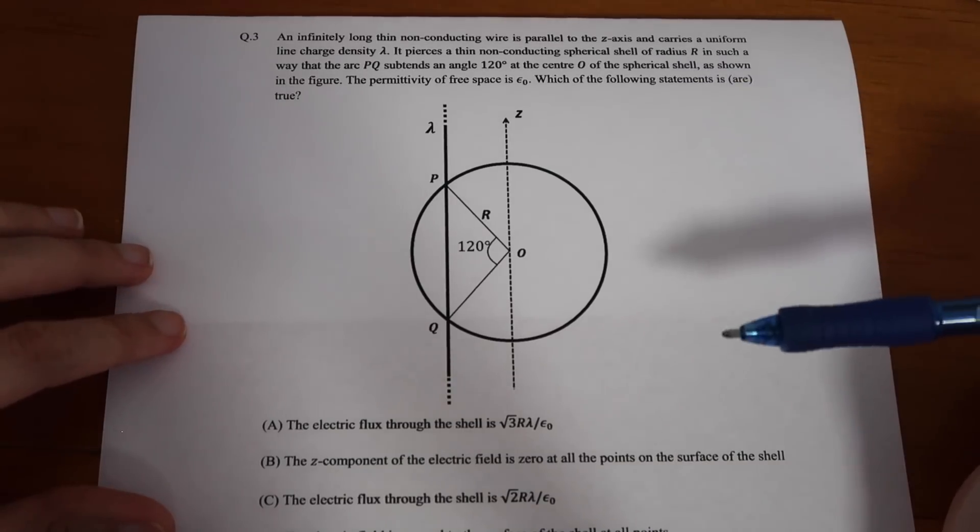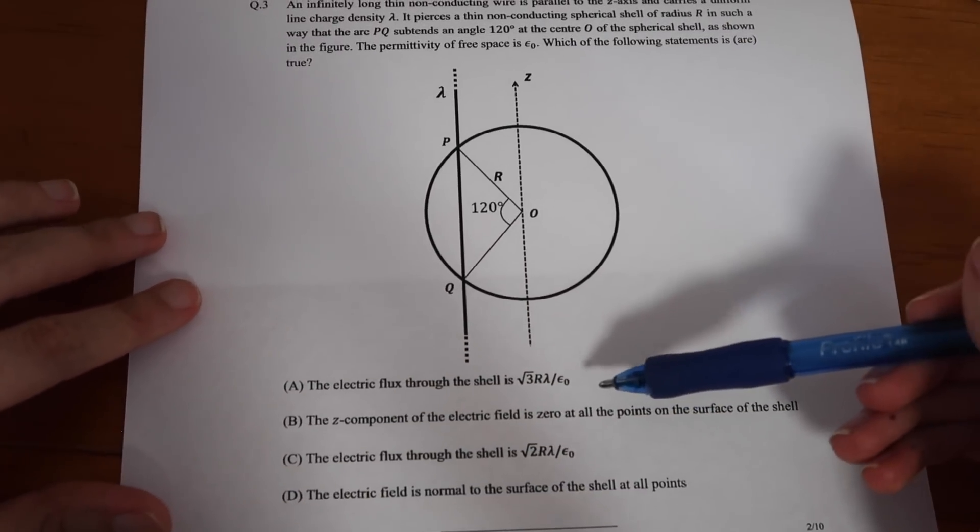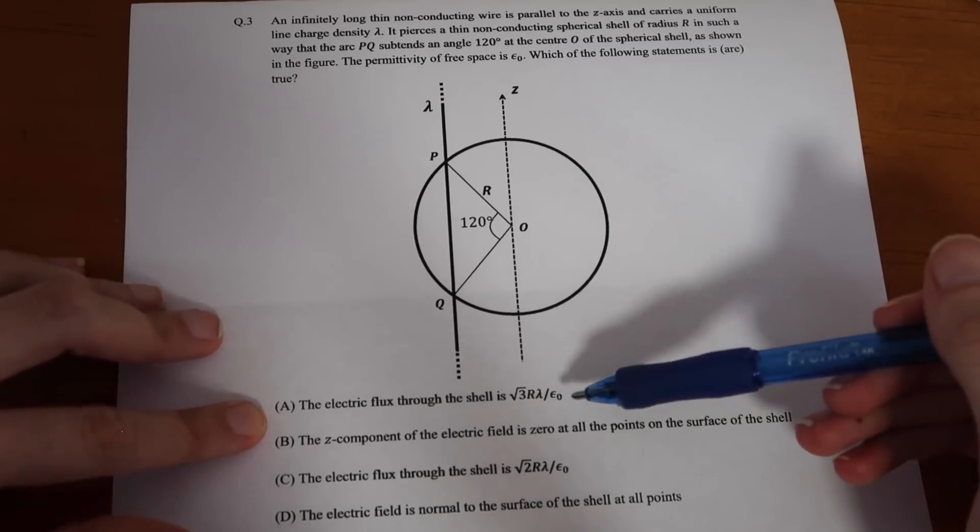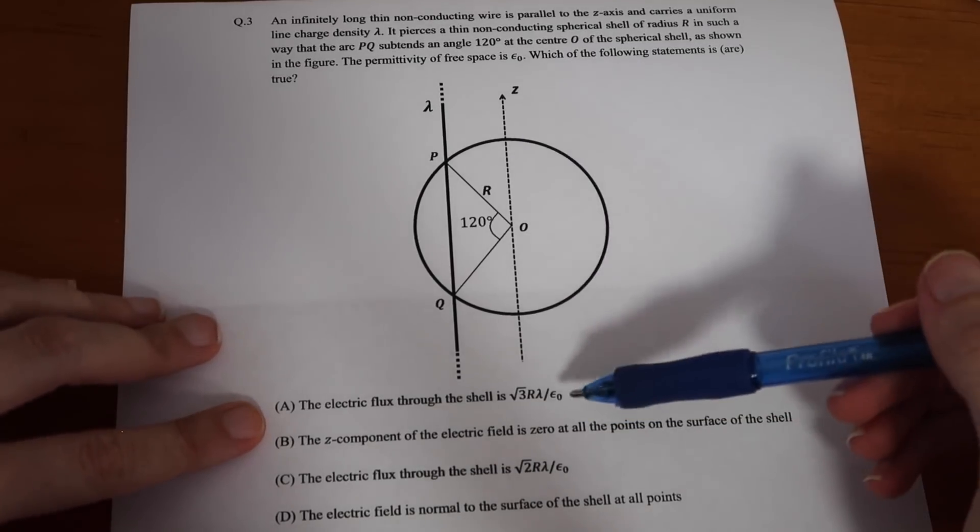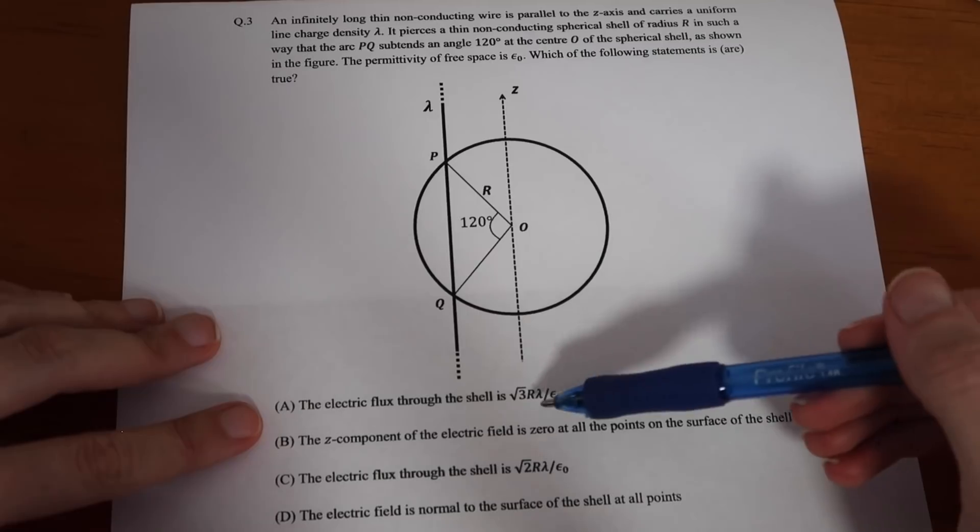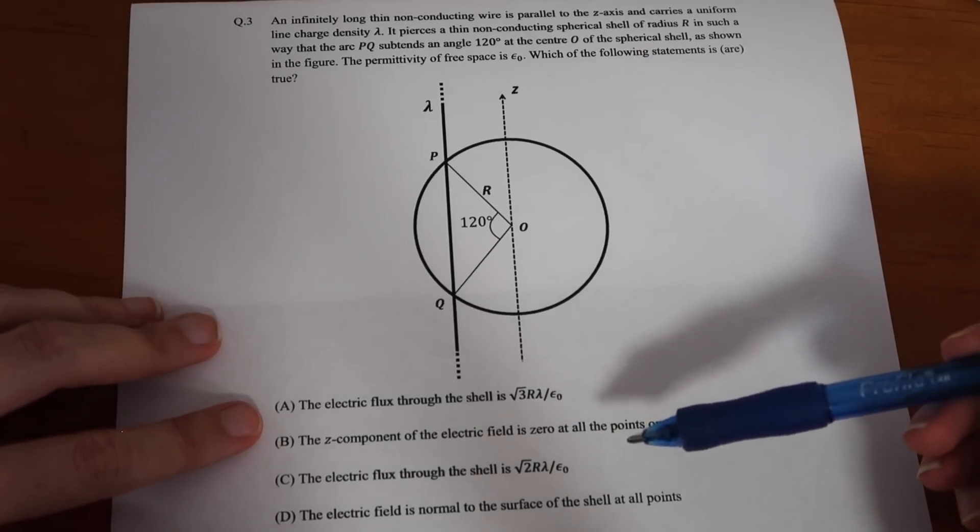The permittivity of free space is epsilon-nought. Which of the following statements are true? Part A asks us to find the electric flux through the shell, and asks us if it's the square root of 3 r lambda over epsilon-nought.